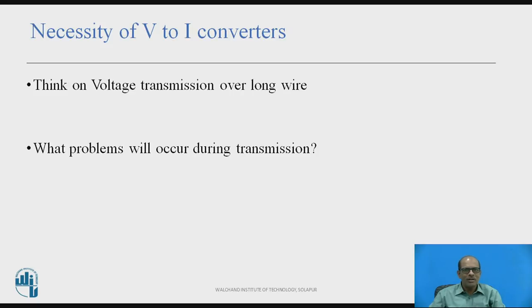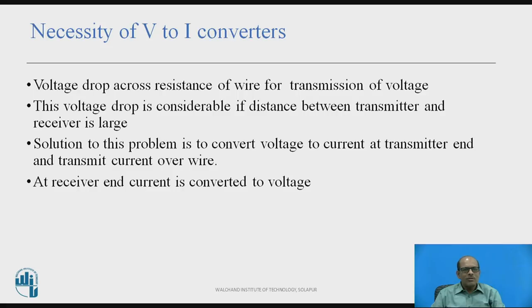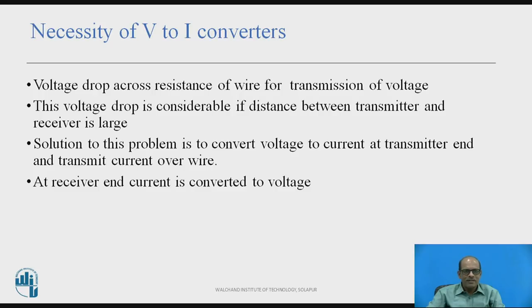Think about the voltage transmission over a long wire and what problems will occur during transmission. During transmission of voltage over a long wire, the potential drop takes place across the resistance of the wire, and due to this, there is a reduction in voltage at the receiver end. To solve this problem, the voltage is converted into current by using a V2I converter, transmitted over a cable, and at the receiver end the current is converted back into voltage.